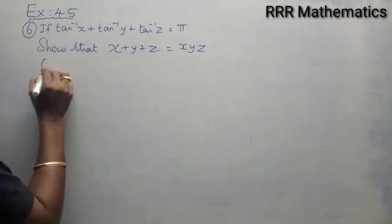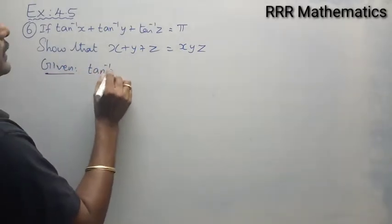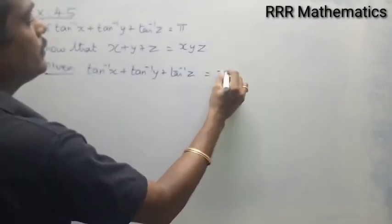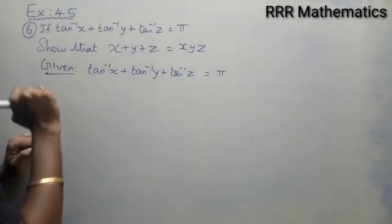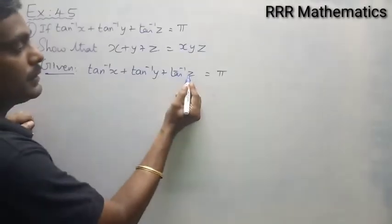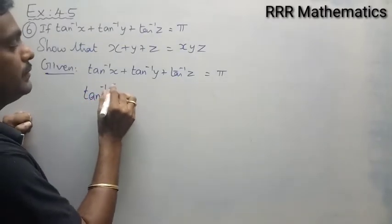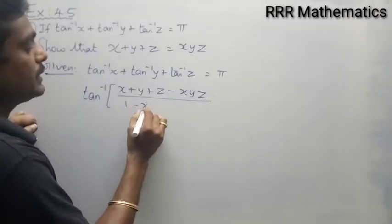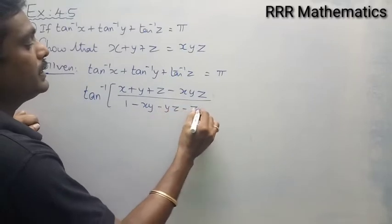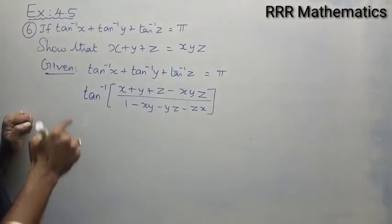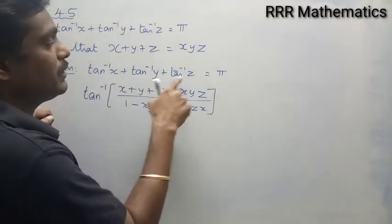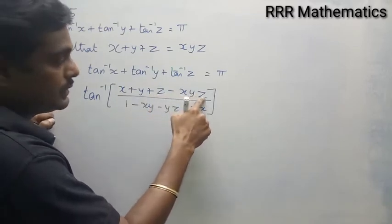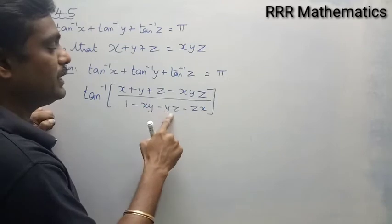Given: tan inverse x plus tan inverse y plus tan inverse z equals 180 degrees. We have a result — tan inverse x plus tan inverse y plus tan inverse z can be written as tan inverse of (x plus y plus z minus x·y·z) divided by (1 minus xy minus yz minus zx). In the same exercise, Question Number 5, we proved this result.